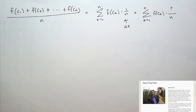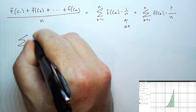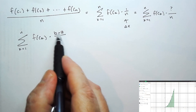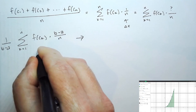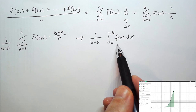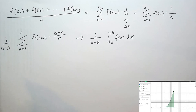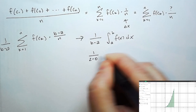Taking advice from James Tanton: if there's something you want, make it happen and deal with the consequences. We want b minus a in the sum, so we multiply by b minus a and then divide by b minus a to preserve the value. Now we have a Riemann sum, and this Riemann sum approaches the integral from a to b of f dx. So the average value of a function is 1 over (b minus a) times the integral from a to b of f dx — exactly what we did to find the average of x squared.